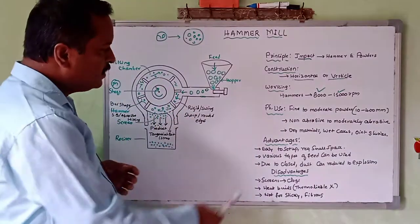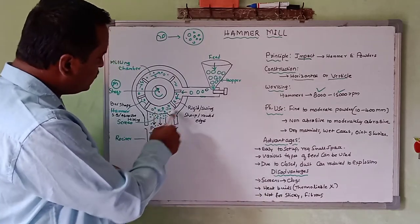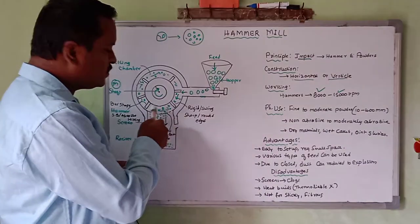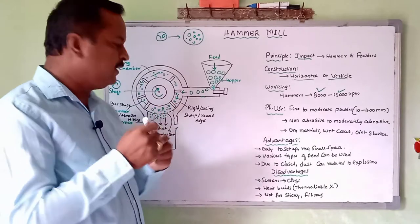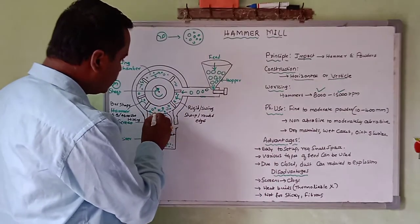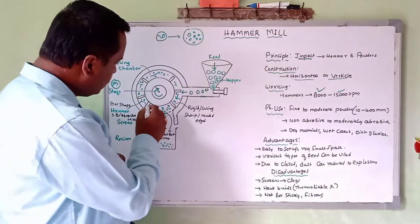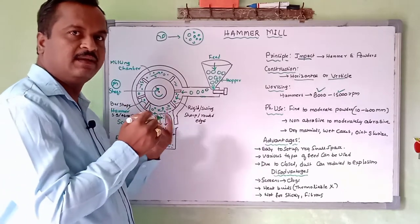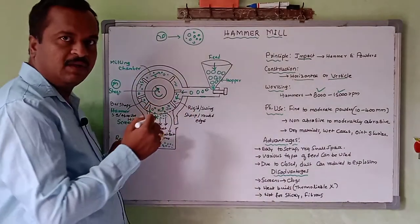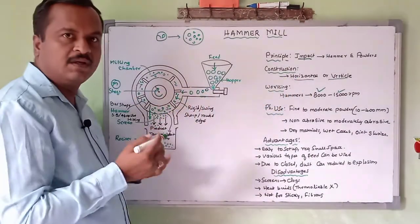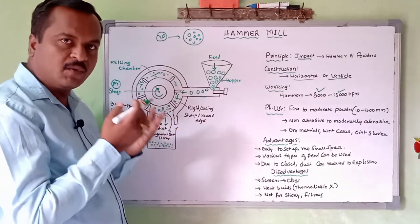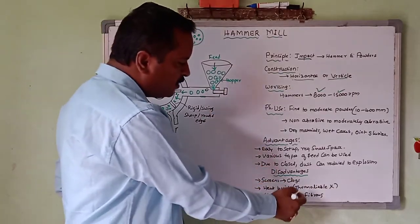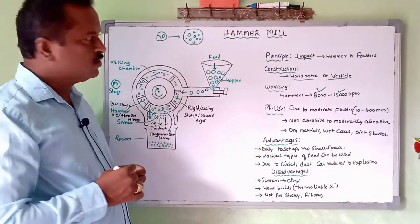Some disadvantages: the screens present in the milling chamber can be changed, but sometimes clogging of material takes place — the size-reduced particles do not move through the screen, causing blocking of the aperture. Also, since the hammer mill operates at 8,000 to 15,000 RPM, heat is generated — so if the product is thermolabile, the hammer mill will not be suitable. This hammer mill is also not suitable for sticky or fibrous materials.